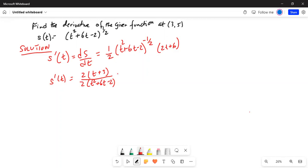The -1/2 in the denominator becomes positive 1/2, because the exponent when it comes from the numerator to denominator changes sign. Now we can cancel this 2 with this 2, so we'll be left with (t+3) / √(t² + 6t - 2).